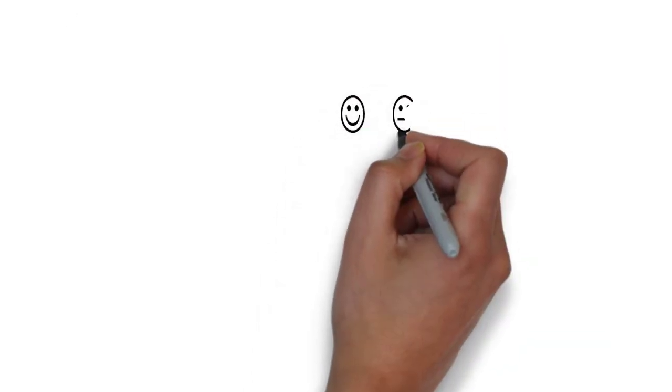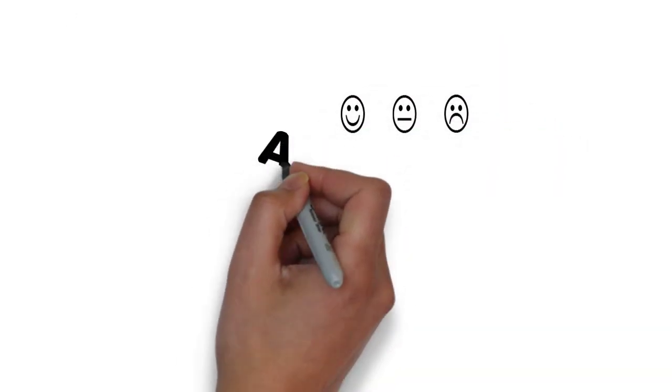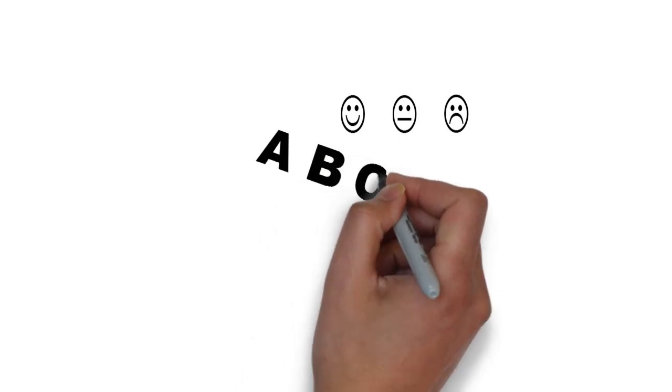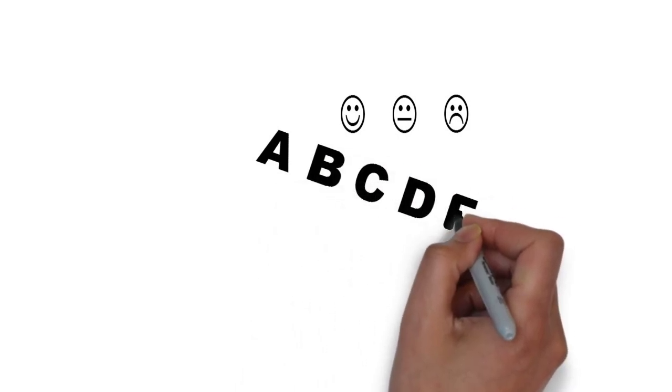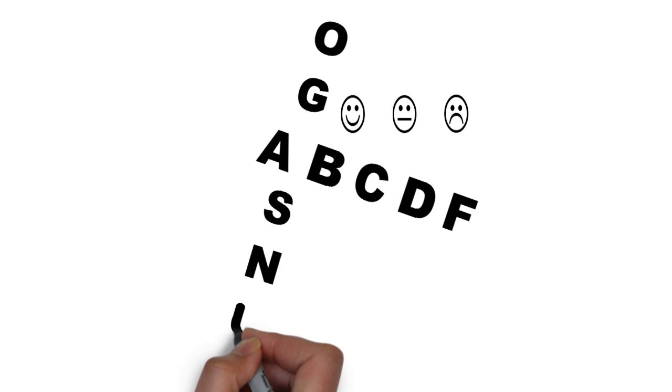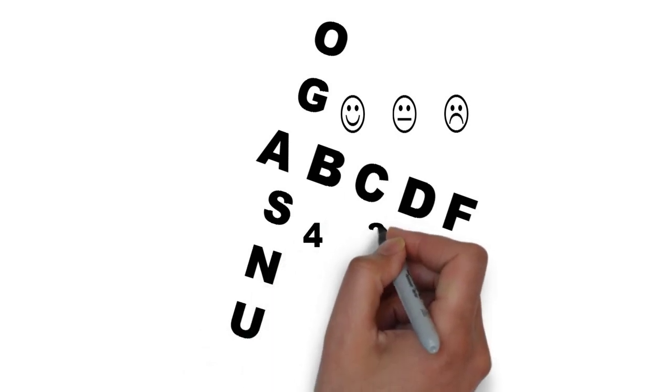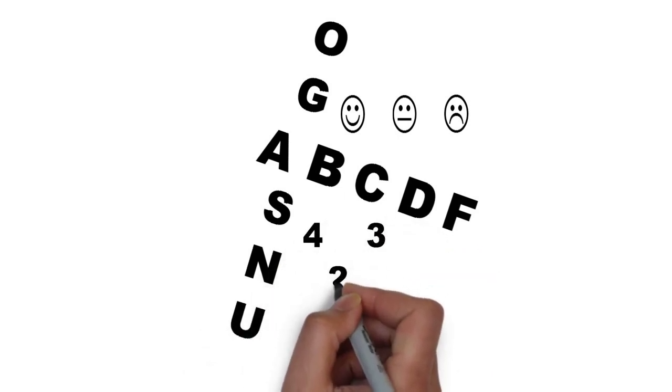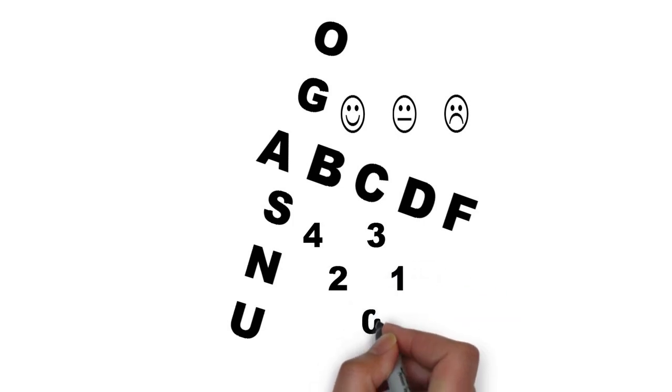Ask teachers from the same grade level and subject to define each of the symbols they use for their grading, including A, B, C, D, and F, or their cousins such as O, G, S, N, U, 4, 3, 2, 1, 0, checks and check minuses.